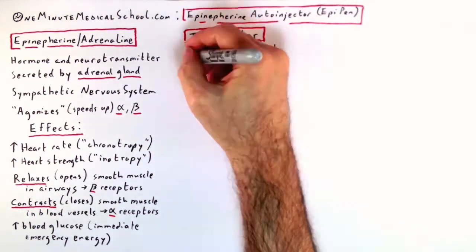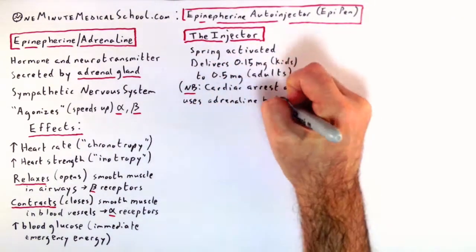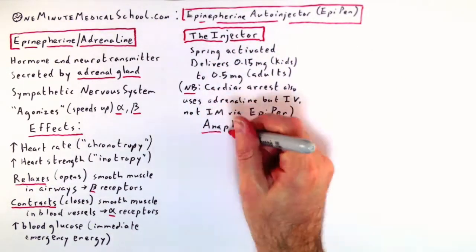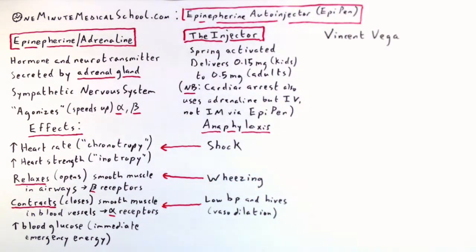The injector itself is a spring-activated device that delivers epinephrine in water, 0.15 to 0.5 milligrams intramuscularly. In anaphylaxis, this directly treats shock, wheezing, low blood pressure, and hives.